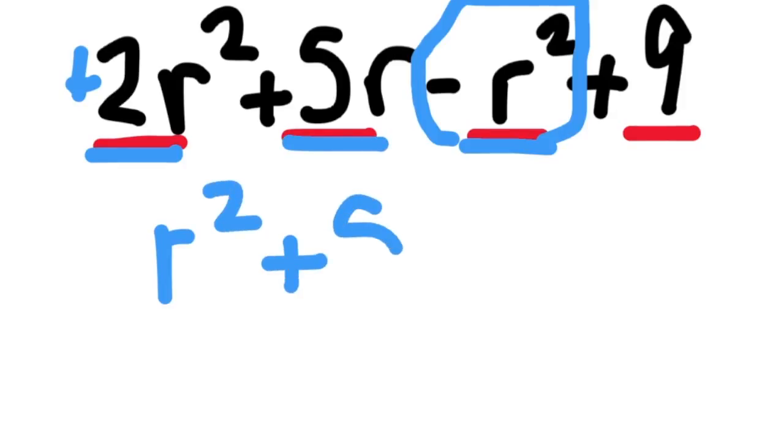Now we have the next term, 5r, which doesn't match anything else, so that's just going to be +5r. And then at the end there's a +9, so this is the simplified version.